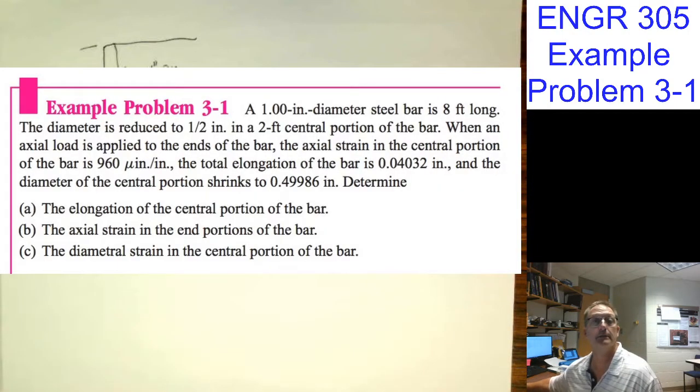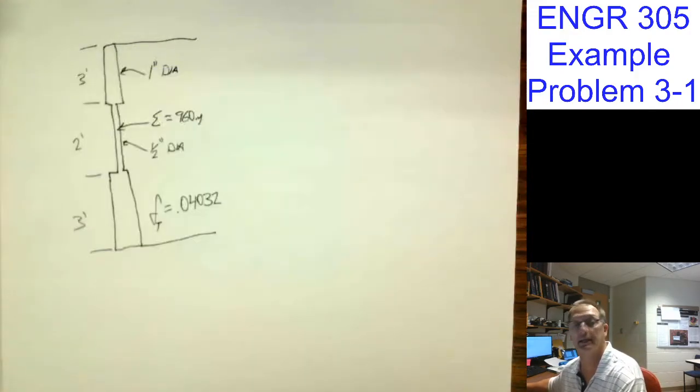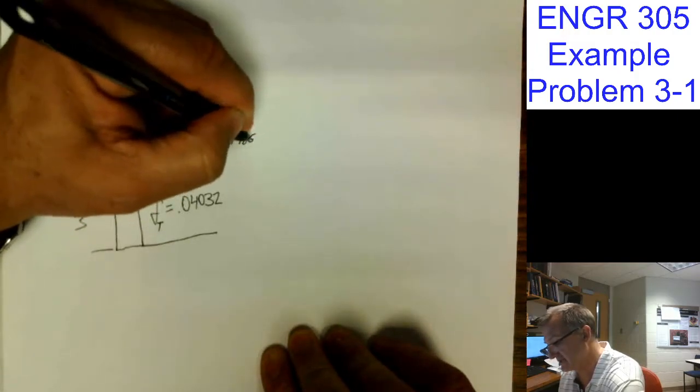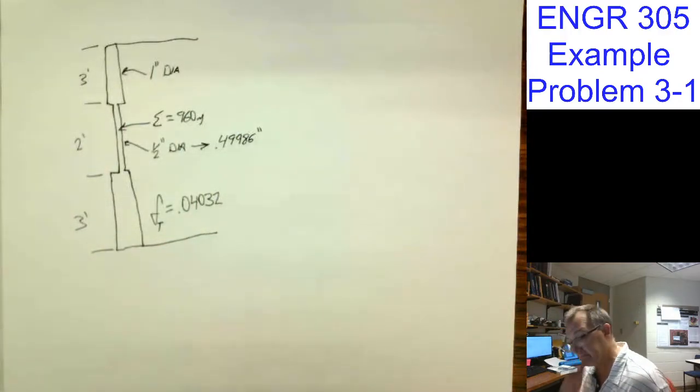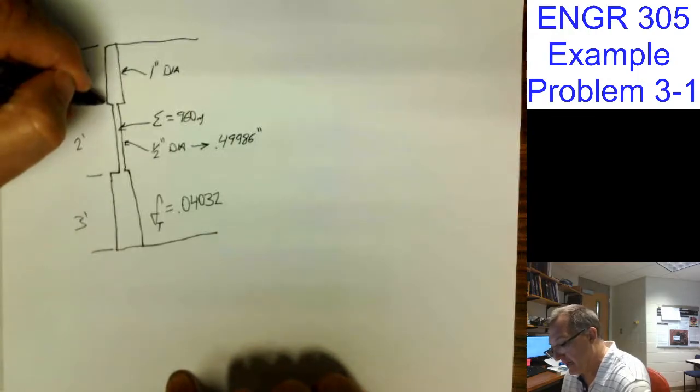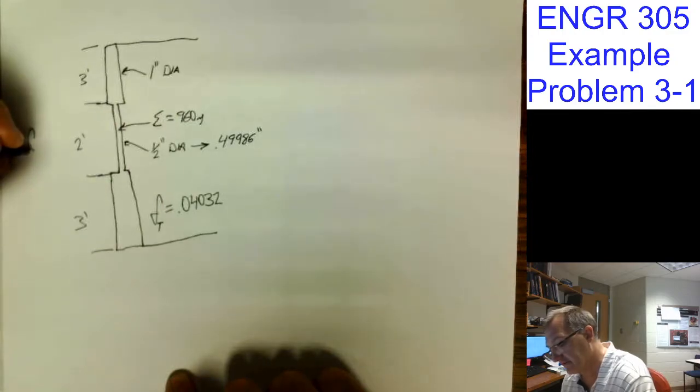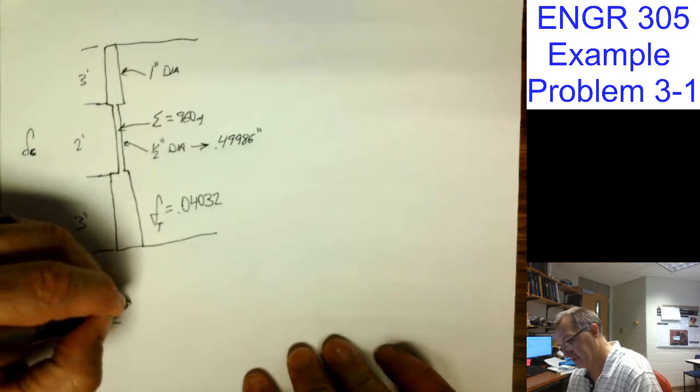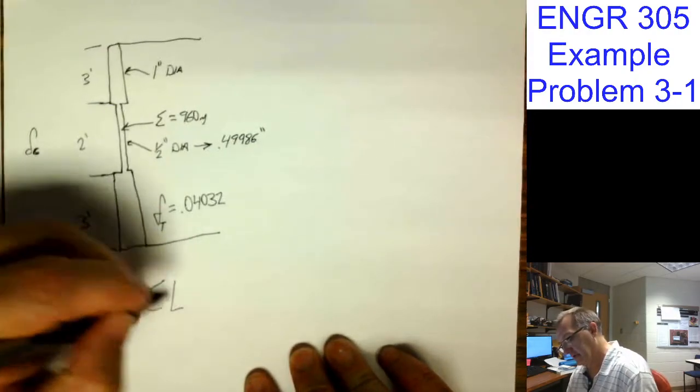What else? And the diameter of the central portion, you know what? I'll put a little note here. It goes to 0.49986. We're just going to leave that alone for right now. So how much does that shrink? What is that delta for the center portion? I'm going to call it delta C.